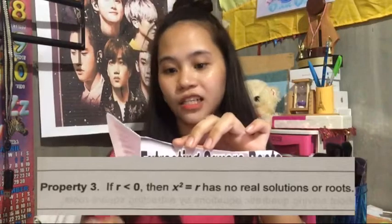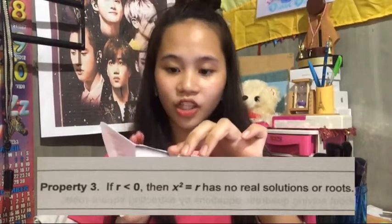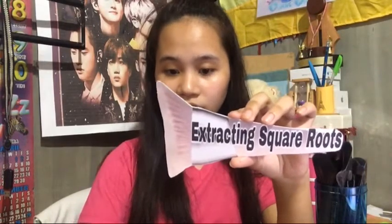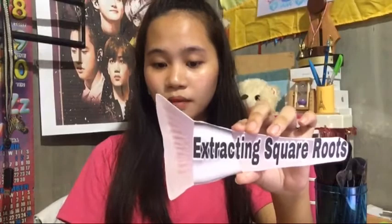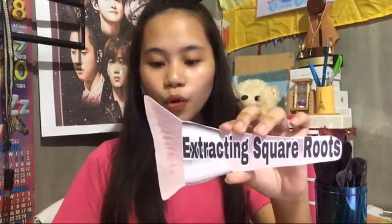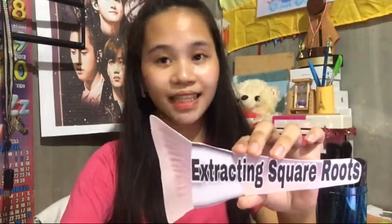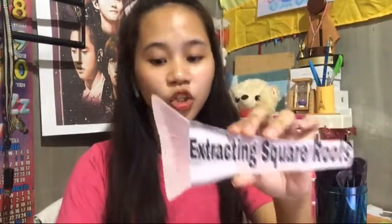Property 3: if r is less than 0, then x squared equals r has no real solutions or roots. An example is x squared plus 2 equals 0. You need to change it to the form x squared equals r, so we have x squared equals negative 2. Since r equals negative 2, which is less than 0, it has no real solutions because there are no real numbers that give a negative result when squared.